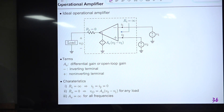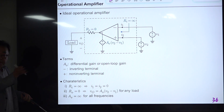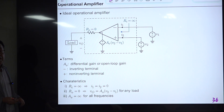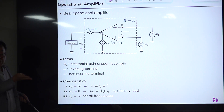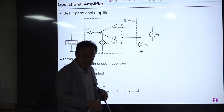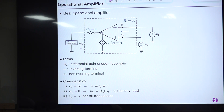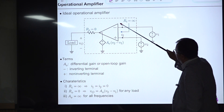The ideal op-amp has inverting terminal, non-inverting terminal, and output terminal. The open-loop or differential gain A_V is very large. The input resistance R_i is infinite — meaning currents I1 and I2 are zero — and the output resistance R_O is zero, so the output voltage appears without any loading effect regardless of load characteristics.